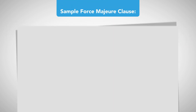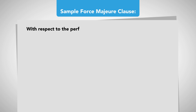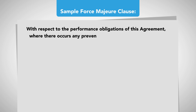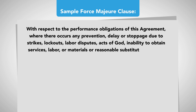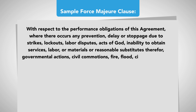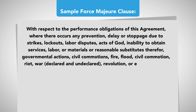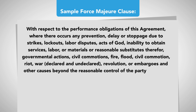Sample Force Majeure Clause. With respect to the performance obligations of this agreement, where there occurs any prevention, delay, or stoppage due to strikes, lockouts, labor disputes, acts of God, inability to obtain services, labor, or materials, or reasonable substitutes therefor, governmental actions, fire, flood, civil commotion, riot, war — declared and undeclared — revolution, or embargoes, and other causes beyond the reasonable control of the party obligated to perform — a force majeure event —